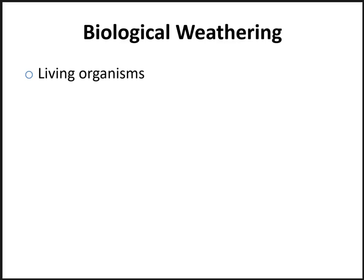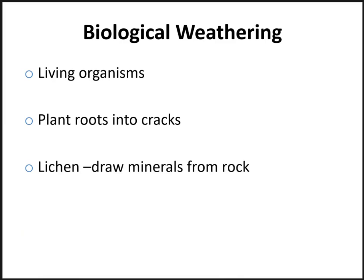Biological weathering is where living organisms — plants and animals — contribute to the weathering process. One notable example is when a plant root grows into a crack and over time widens it as the root gets bigger. Another example is lichen that grows on rocks and draws minerals from the rocks through ion exchange and leaching, weakening the rock over time. Finally, burrowing animals mix the soil, which can lead to rocks being disintegrated.